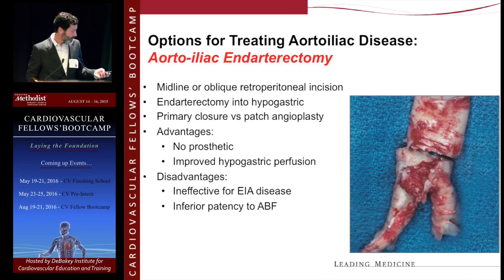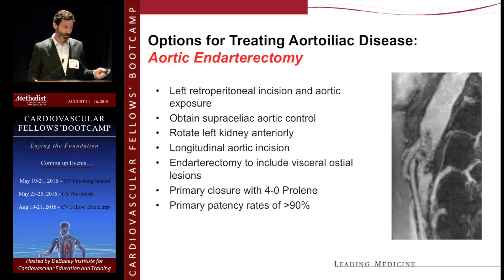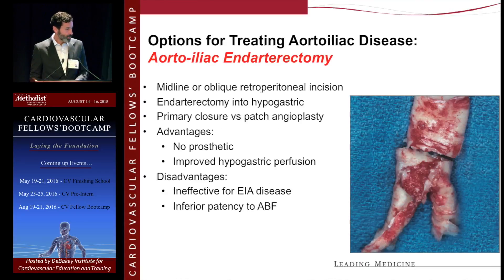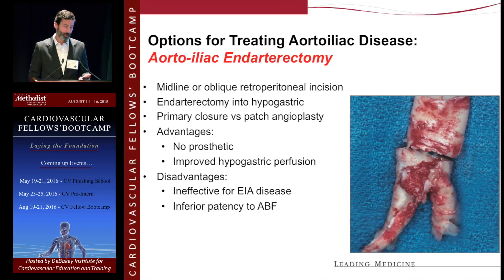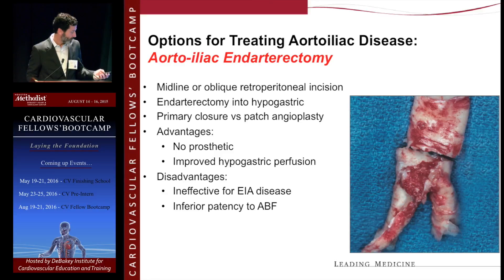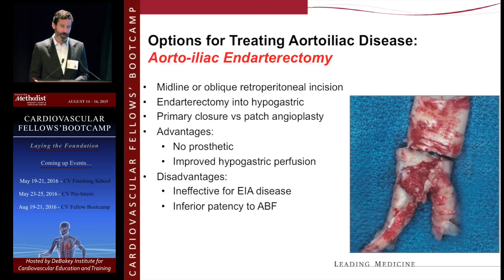Aortoiliac endarterectomy is a somewhat less common operation because the results are not as good as aortobifemoral bypass. Done either through a midline or oblique retroperitoneal incision, you can perform an endarterectomy into the hypogastric artery. The advantage is there's no prosthetic involved. The disadvantage is it's not very effective for external iliac disease — that's not an artery amenable to endarterectomy — and the patency is inferior to other operations.